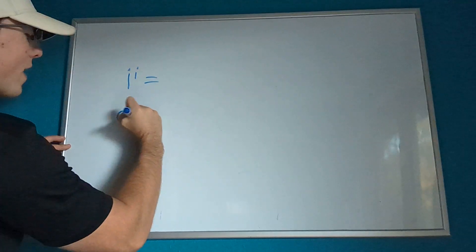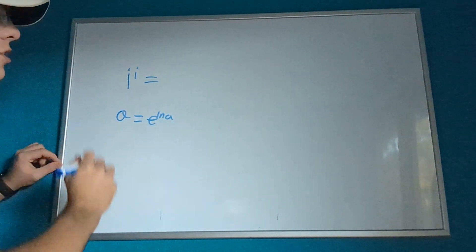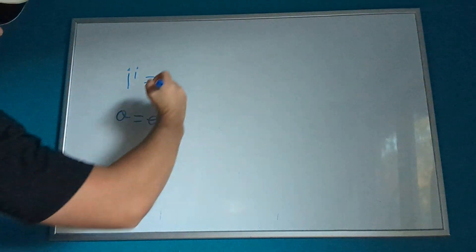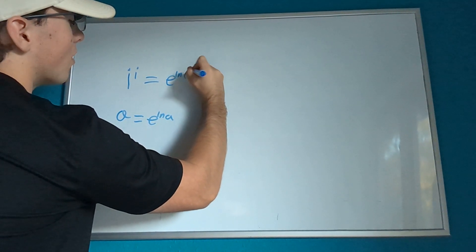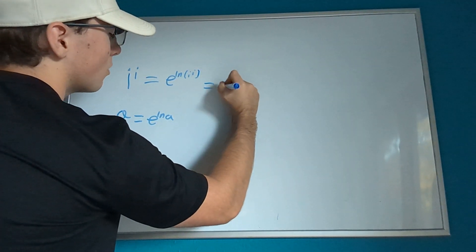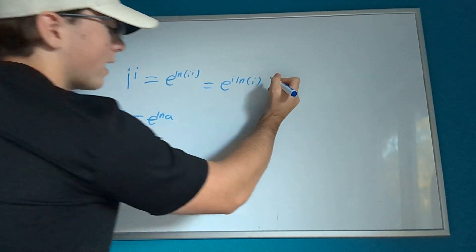We can begin by using the fact that a equals e to the natural log of a, similar to what I did in the video about one to the power i. So this equals e to the natural log of i to the power i. Then we can use the power rule here, so this will equal e to the power i times the natural log of i.